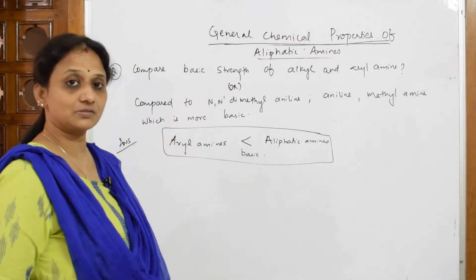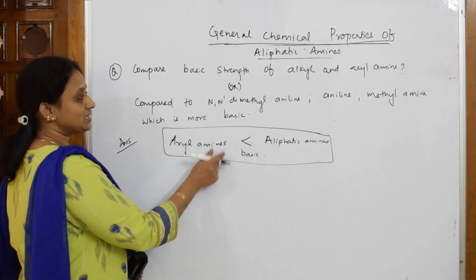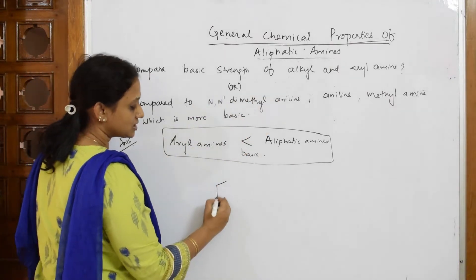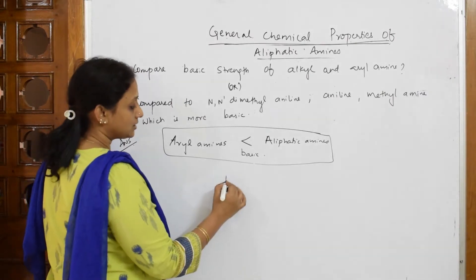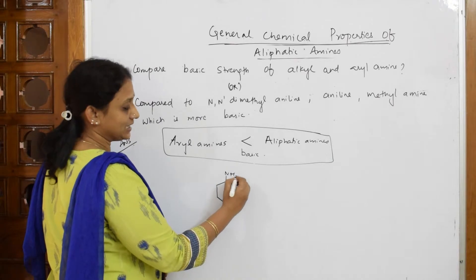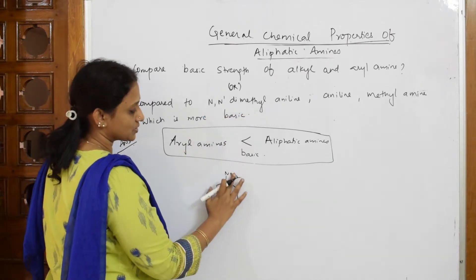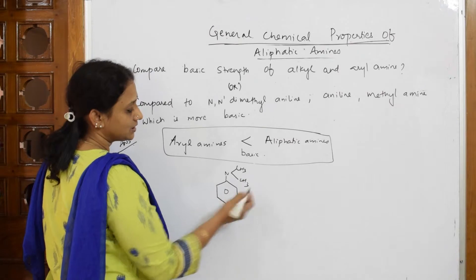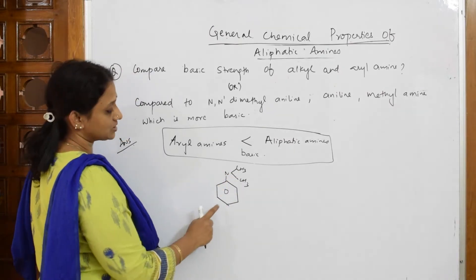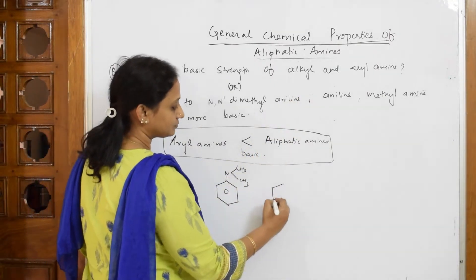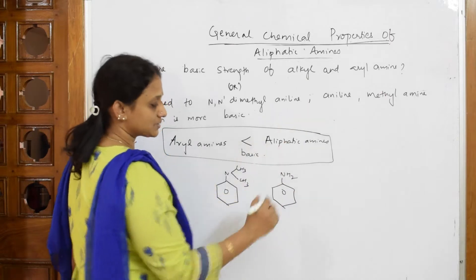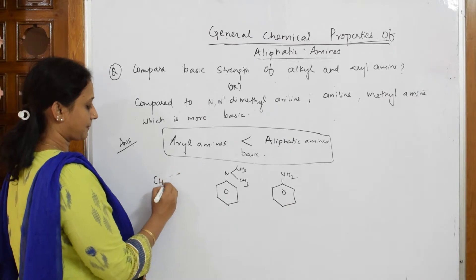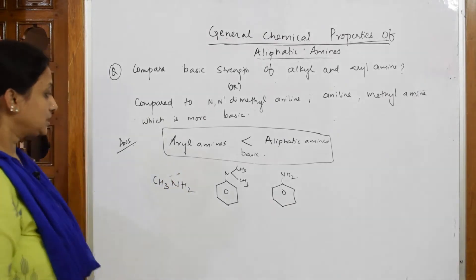They may give the question in different forms, so be careful. Let's apply this concept to compare N,N-dimethylaniline, aniline, and methylamine. N,N-dimethylaniline has a benzene ring with a nitrogen, and to that nitrogen we add two CH3 groups — that's N,N-dimethylaniline. The second compound is aniline, and the third is methylamine.